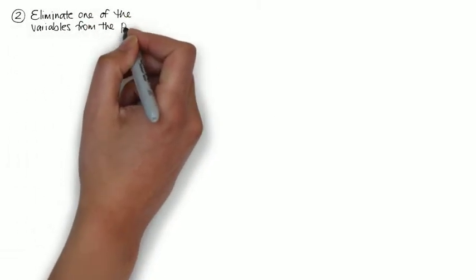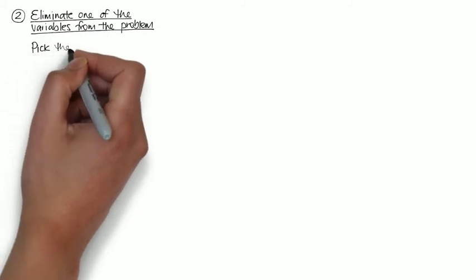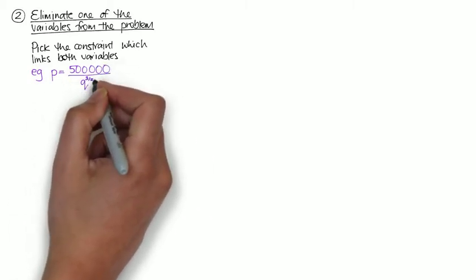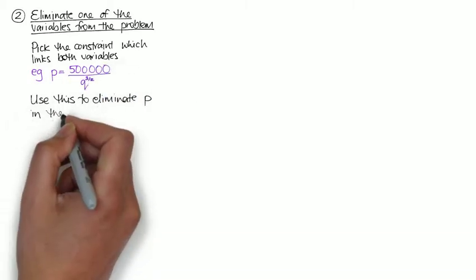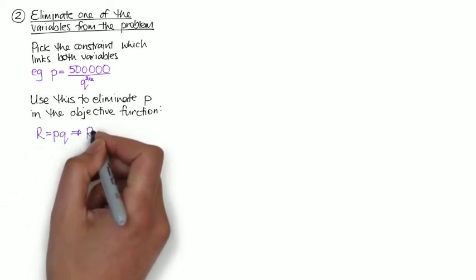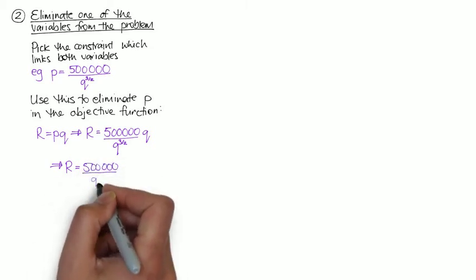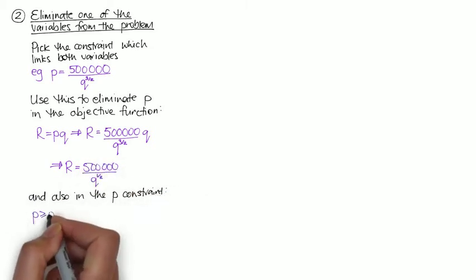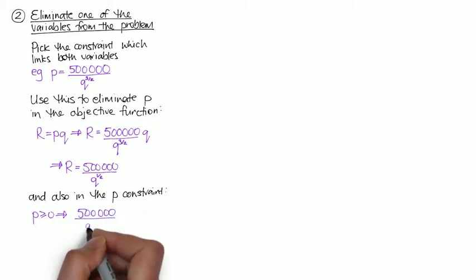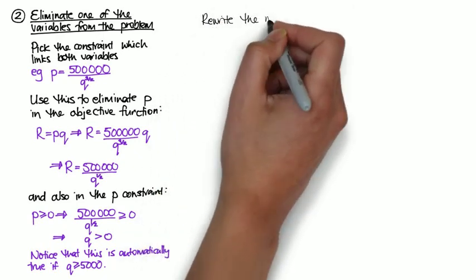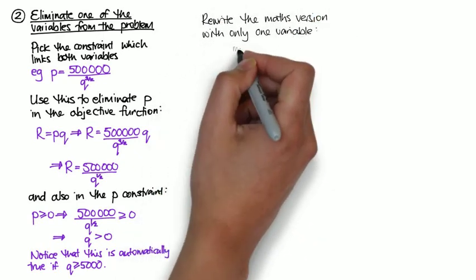The next thing that I need to do is eliminate one of the variables from the problem, because at the moment we've got both price and quantity. So a good idea is to pick a constraint which links both variables. In this case I'm going to use p equals 500,000 over q to the 3 over 2, and I replace p with that wherever I see it in the revenue, and also in the p constraint. Notice that in this case this actually doesn't give me another constraint, because it's automatically satisfied when q is greater than 5000.